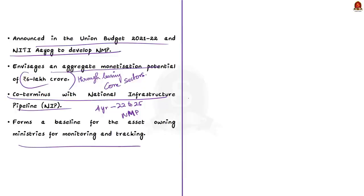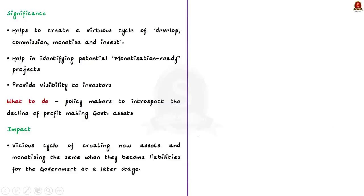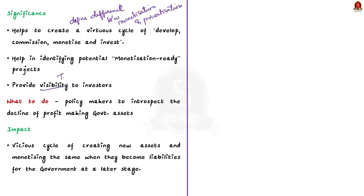The NMP is linked to the National Infrastructure Pipeline, coinciding with its remaining four-year period from FY2022 to FY2025. It will establish a baseline for asset-owning ministries to monitor investment performance. Key significance of NMP includes helping to define the difference between privatization and development, creating a virtuous cycle of development — commission, monetize, and invest — identifying monetization-ready projects across infrastructure sectors, and ensuring transparency to investors.